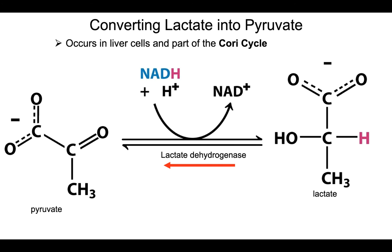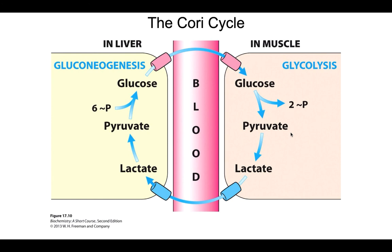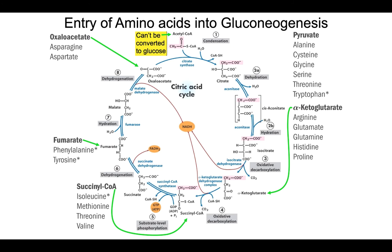This reaction occurs quite often in something called the Cori cycle, where muscle cells that are constantly fermenting are constantly producing lactate. That lactate is sent through the blood to the liver, where through gluconeogenesis the liver converts that lactate to pyruvate and then back to glucose, which it can then send back to the muscles. So we have this beautiful cycle called the Cori cycle.